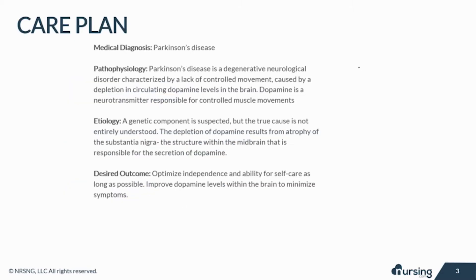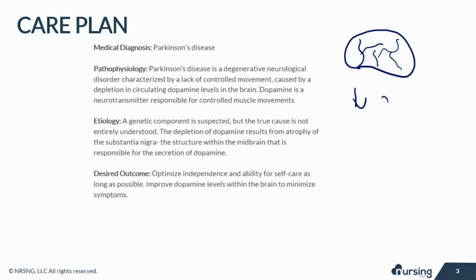Parkinson's disease is a degenerative neurological disorder characterized by the loss of controlled movement. This is caused by the depletion of circulating dopamine levels in the brain. Dopamine is a neurotransmitter responsible for controlled muscle movements. A genetic component is suspected, but the true cause is unknown.